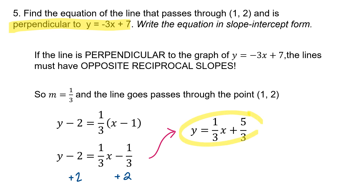That is the line passing through (1, 2) and perpendicular to Y equals negative 3X plus 7, meaning it crosses at a 90-degree angle. Notice the Y-intercepts have nothing to do with each other — the original line's Y-intercept was 7, and our new line's Y-intercept is five-thirds. That is completely normal. A common mistake is thinking the Y-intercept of the original line has something to do with the new line — it doesn't.